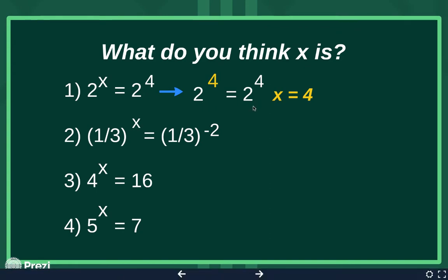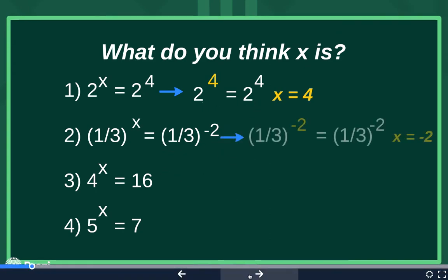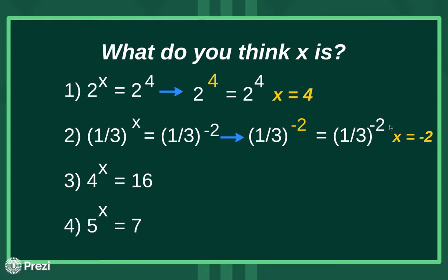Kind of the same idea with number 2. If we have the same base on both sides, that means their exponents must be equal. So in this case, your x, your exponent, was negative 2.